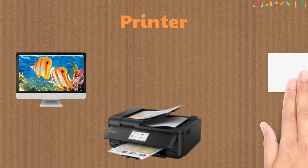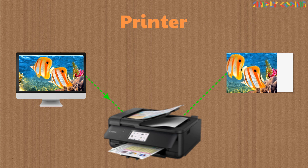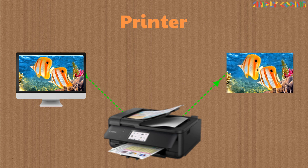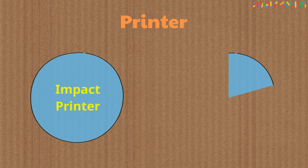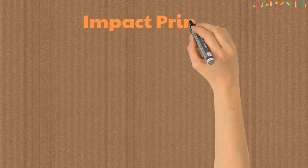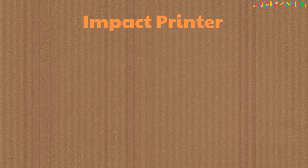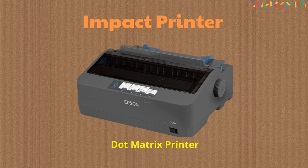A printer takes electronic data from a computer and generates a hard copy of it. There are two types of printers: impact printers and non-impact printers. An example of an impact printer is the dot matrix printer, where there is mechanical contact between the printer head and paper.